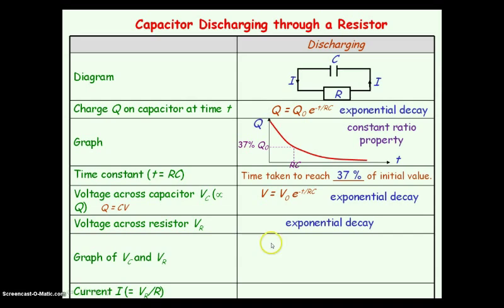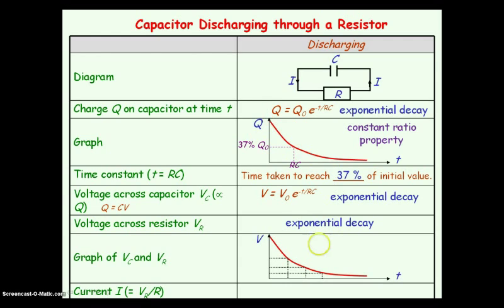Plotting a graph of the voltage across the capacitor, or the voltage across the resistor, against time t will follow a similar shape as the charge-time graph because of the exponential decay. And as a reminder, the exponential decay has this constant ratio feature shown by the dotted lines — so for equal times the voltage will fall by equal ratio.